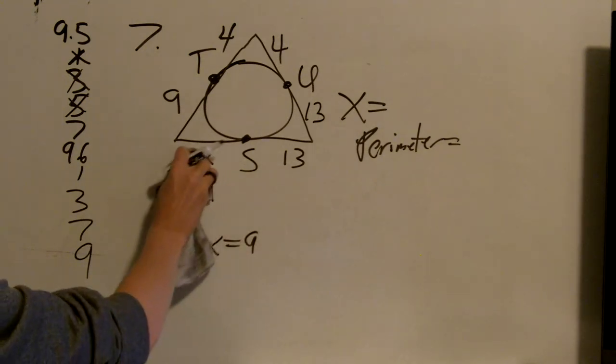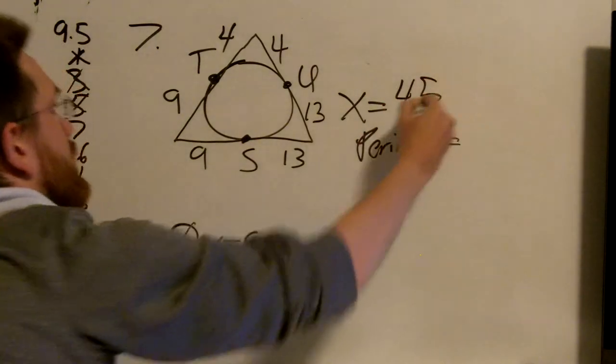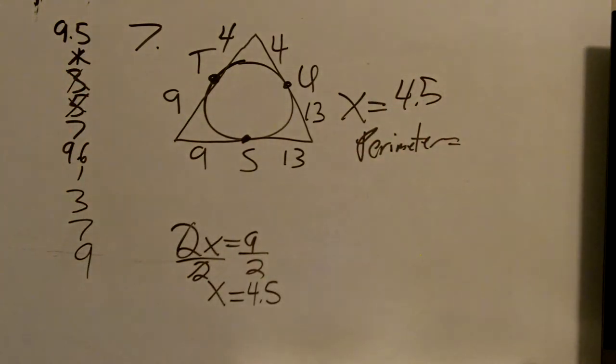I'm going to actually even erase that 2x and do that problem separately and make that 9. So I'll do this part first. Divide both sides by 2. x equals 4.5. So there we have our first part of the answer.